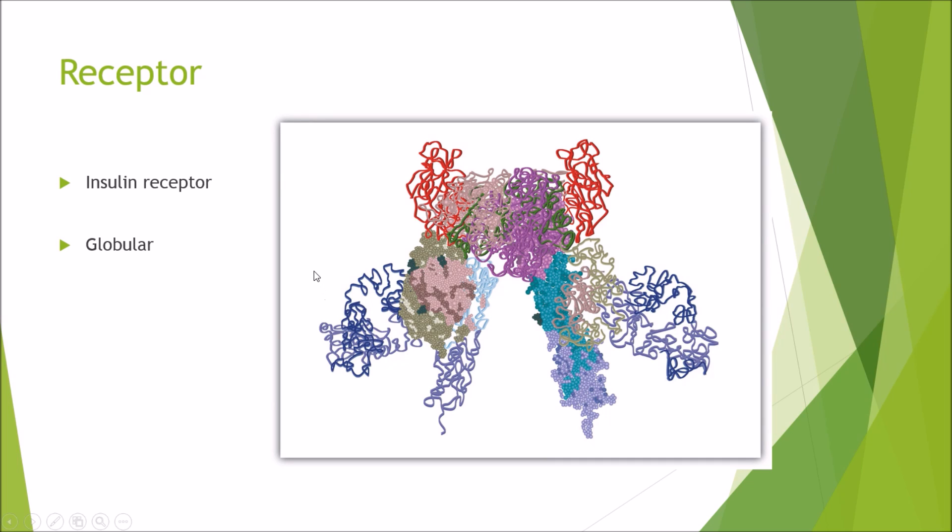For receptor proteins, these are the things that you find on the cell's surface membrane which receive signals and cause particular function. This here is an insulin receptor. Insulin will bind and then a signal will be sent towards the middle of the cell telling you that insulin has been detected. And as you can see it's globular in shape.